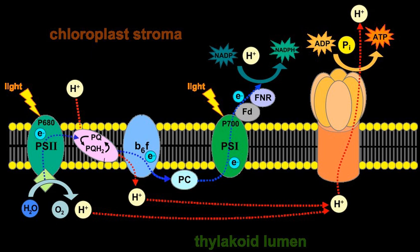The electron flow goes from PSII to cytochrome B6F to PSI. In PSI, the electron gets energy from another photon. The final electron acceptor is NADP. In oxygenic photosynthesis, the first electron donor is water, creating oxygen as a waste product. In anoxygenic photosynthesis, various electron donors are used.